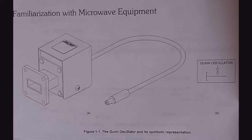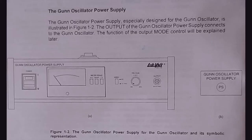The figure of a gun oscillator can be seen on the screen — it is connected with the power supply unit, and the other side is connected with a waveguide. The schematic symbol of the gun oscillator is shown at the right. The power supply unit shown on the screen is specially designed for powering up the gun oscillator. It has an on/off switch, an analog display to show the DC excitation voltage, and some control knobs whose functions will be explained later.